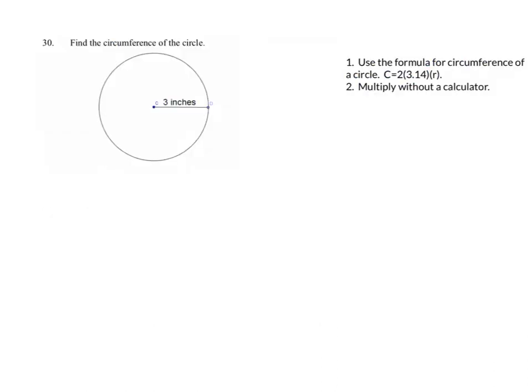The next one we're going to look at is the circumference of a circle. So we're going to use the formula for circumference of a circle, which is C equals 2 times pi times r, and remember that pi we're using the value 3.14.